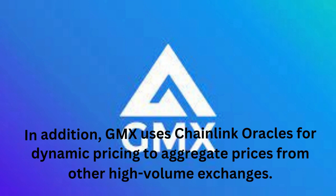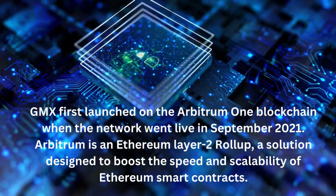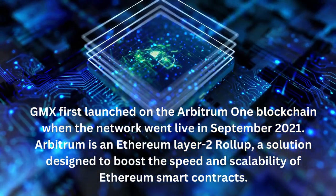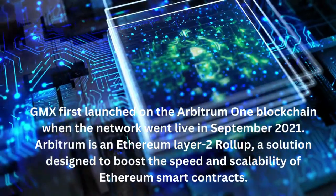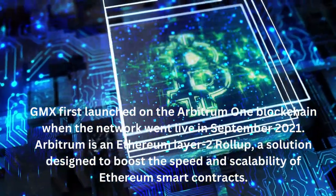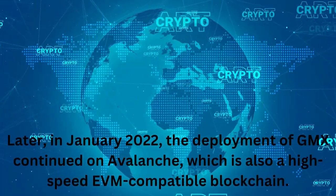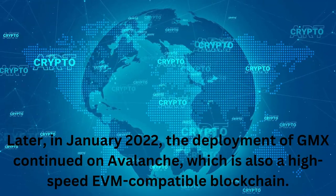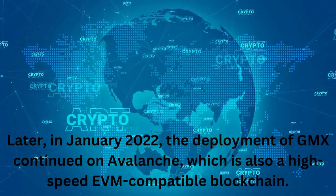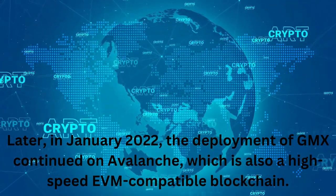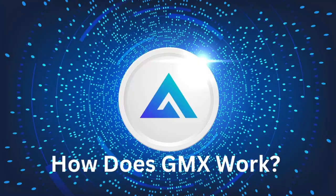GMX first launched on the Arbitrum One blockchain when the network went live in September 2021. Arbitrum is an Ethereum layer 2 rollup, a solution designed to boost the speed and scalability of Ethereum smart contracts. Later, in January 2022, GMX expanded its deployment to Avalanche, which is also a high-speed EVM-compatible blockchain.